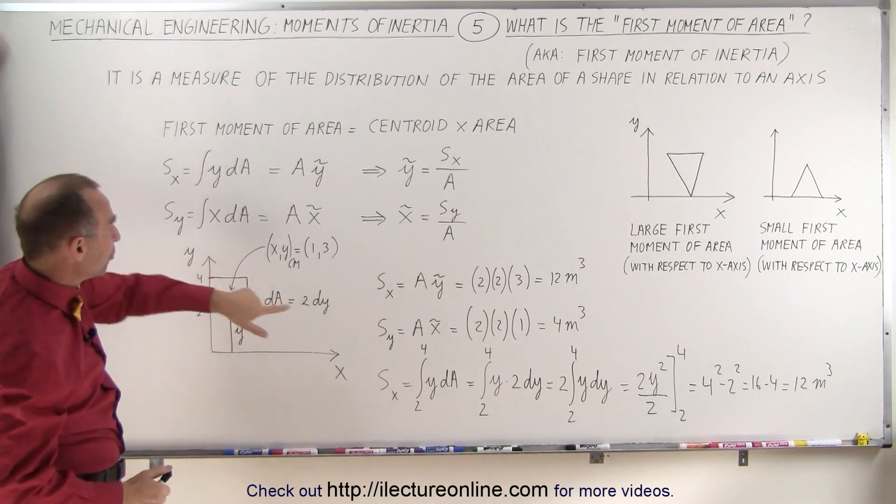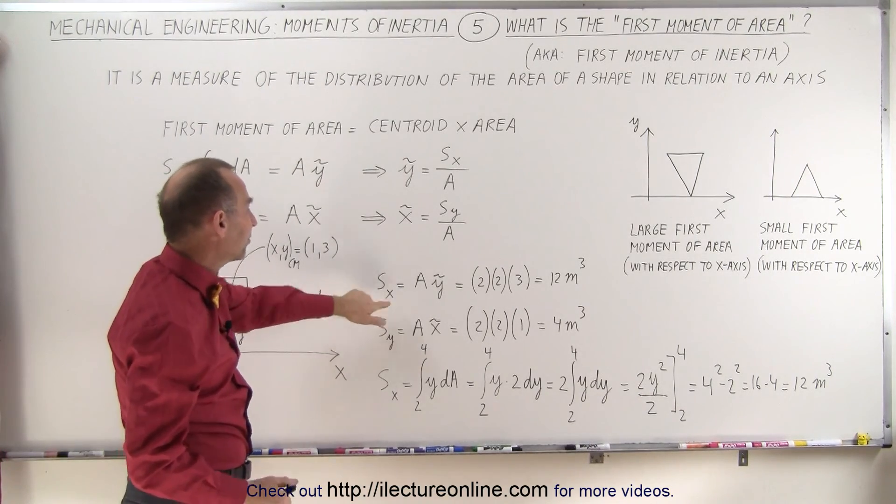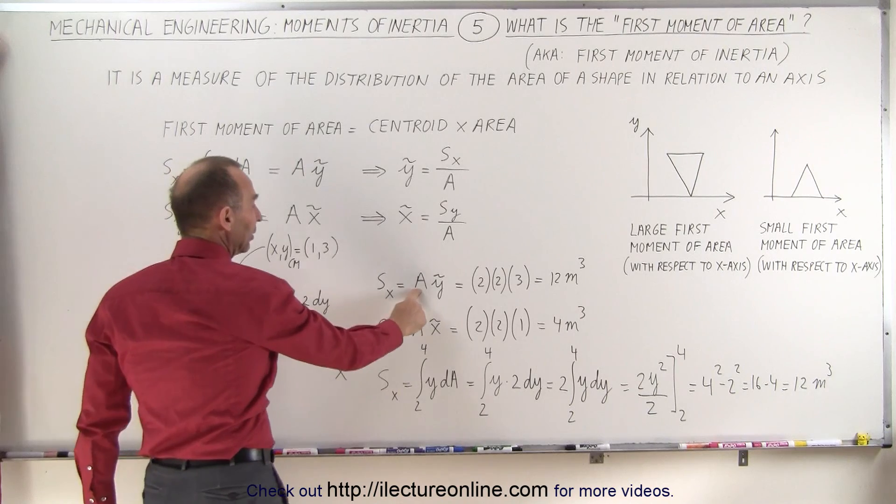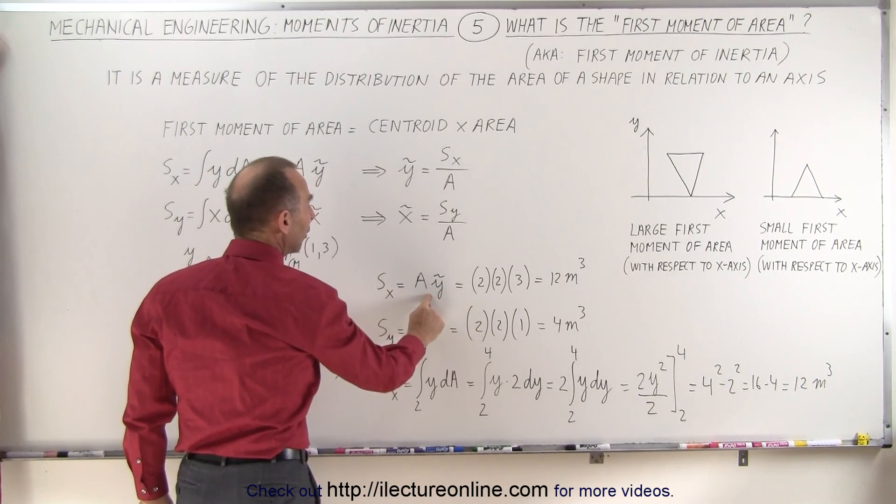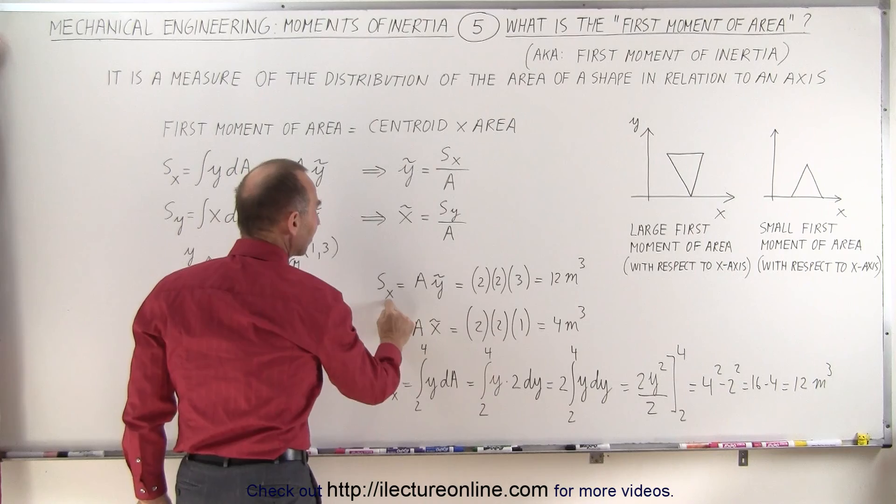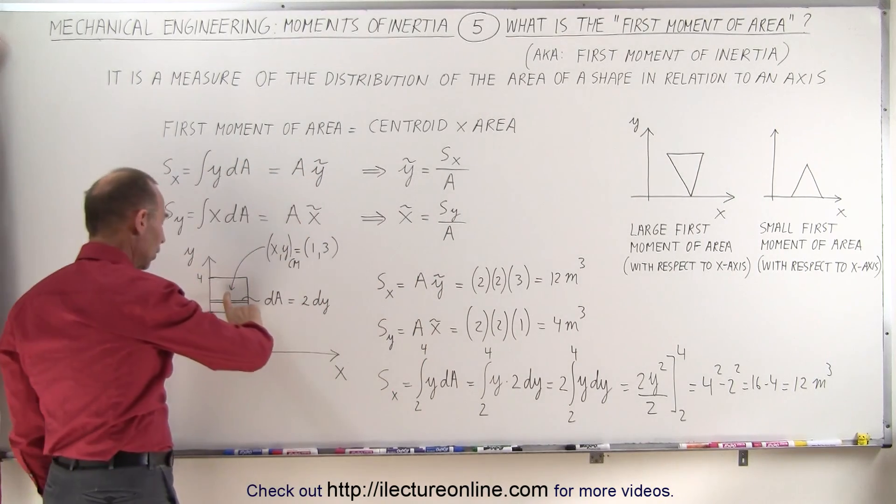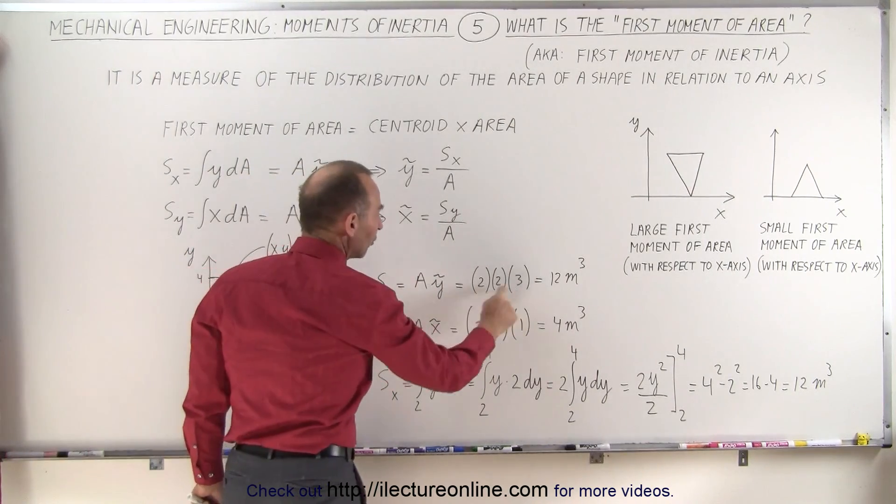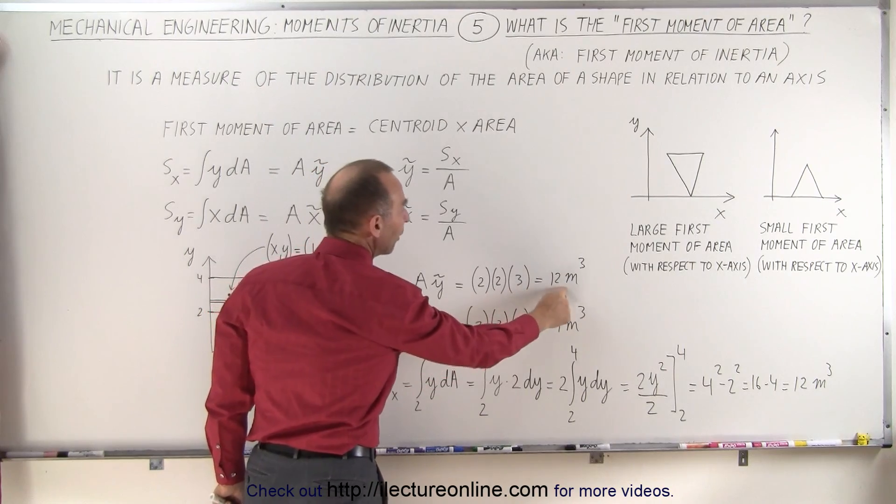We can find the first moment of area with respect to the x-axis by taking the area, which is 2 times 2 equal to 4, times the distance from the x-axis to the centroid of the area, which is a distance of 3 units. So 2 times 2 times 3 is 12 meters cubed.